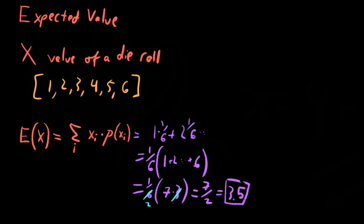Now, you might say that doesn't make any sense — 3.5 isn't even an option here. How can 3.5 be the expected value of a discrete random variable when it's not even a possibility? That's because the expected value doesn't have to be one of the options. It is the value we expect the random variable to converge to on average after many, many trials — the mean of these six equally likely numbers.